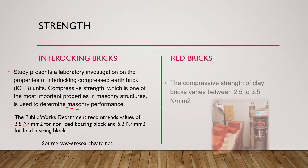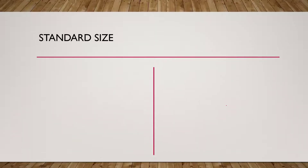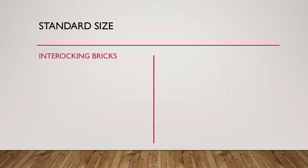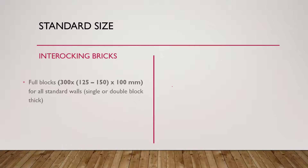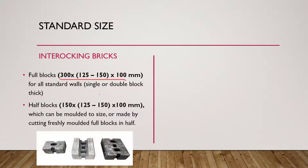Red bricks vary from 2.5 to 3.5 N/mm² in compressive strength. Next, regarding standard sizes: interlocking bricks have full blocks and half blocks. Full blocks vary from 300 × 125 to 150 mm in breadth and 100 mm in depth, and are used for standard walls.